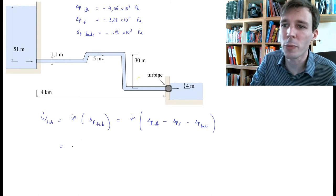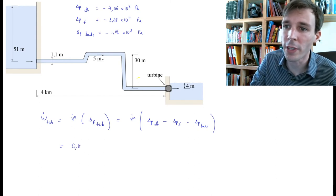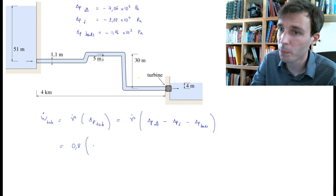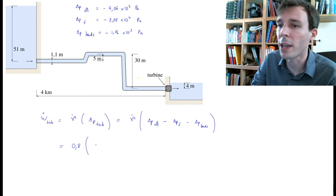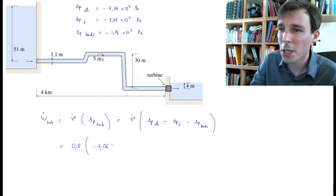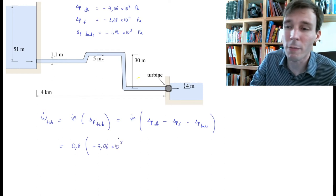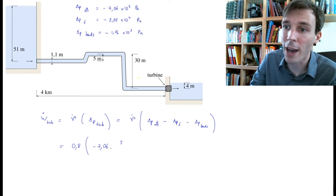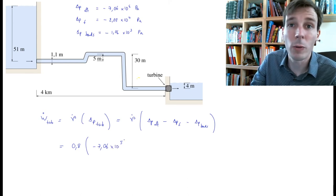And I multiply this by a sum, and the sum is minus 7.06 times 10 to the power 5. This is the pressure drop that we would have if there was no friction.